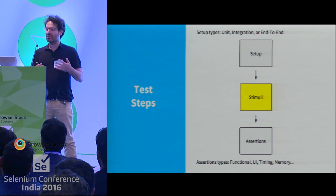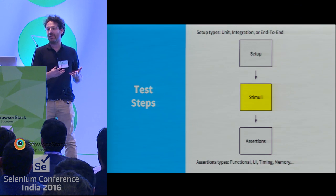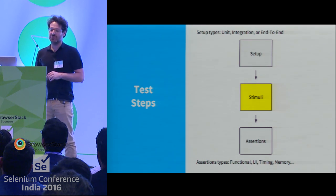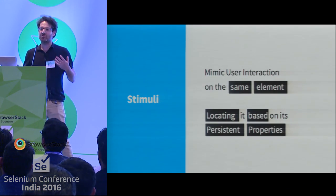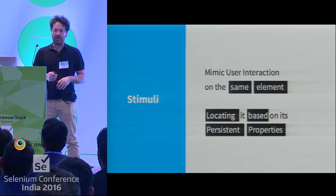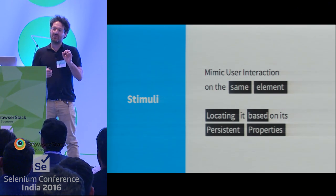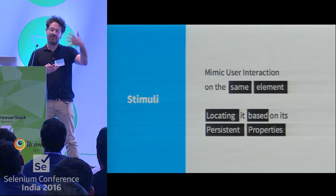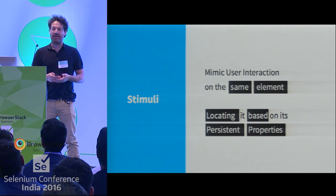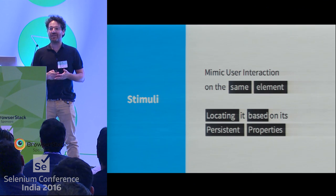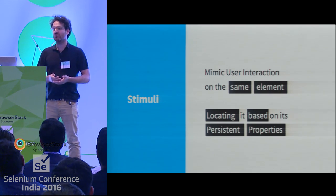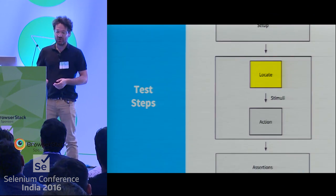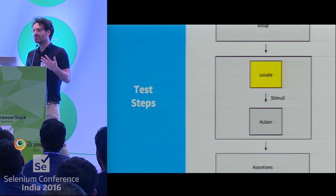We're going to focus on one thing: the stimuli. Before any test you set up some data, you do some actions, and then you assert. We're going to focus mostly on the stimuli part — the user interaction. Unlike unit testing, this is the UI, which keeps changing, and because it keeps changing we get tests that fail with false positives. We want to reduce those to zero.